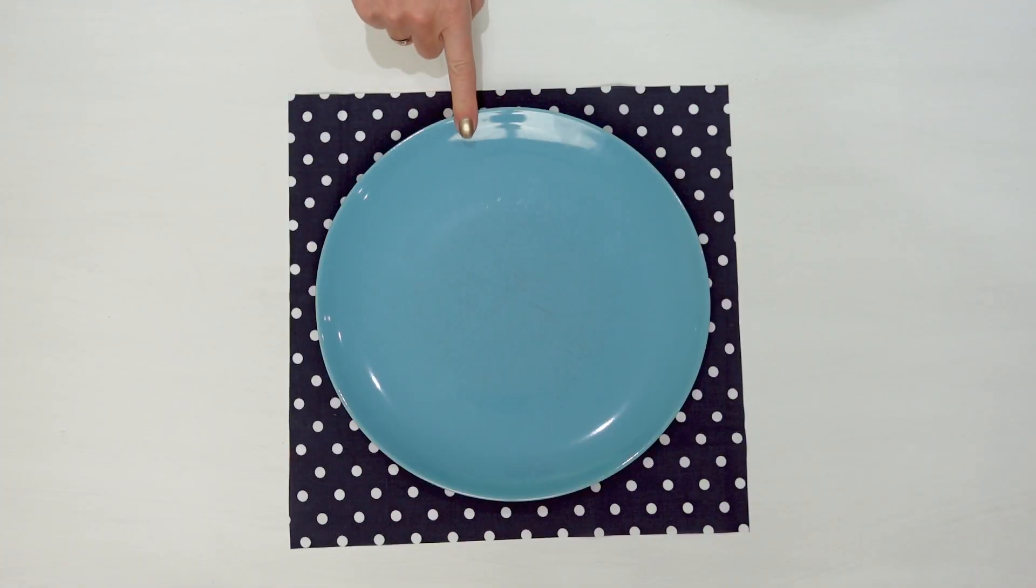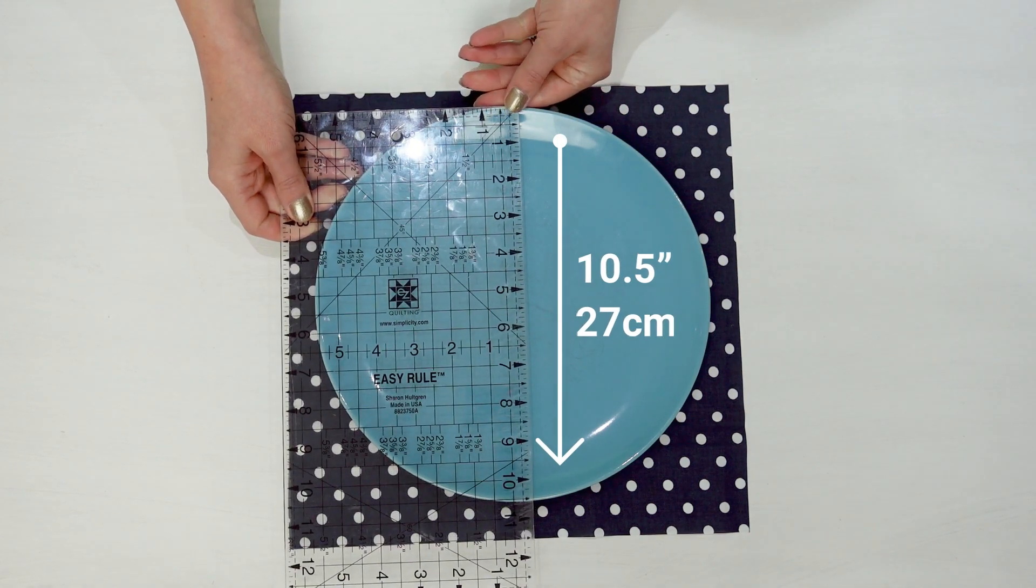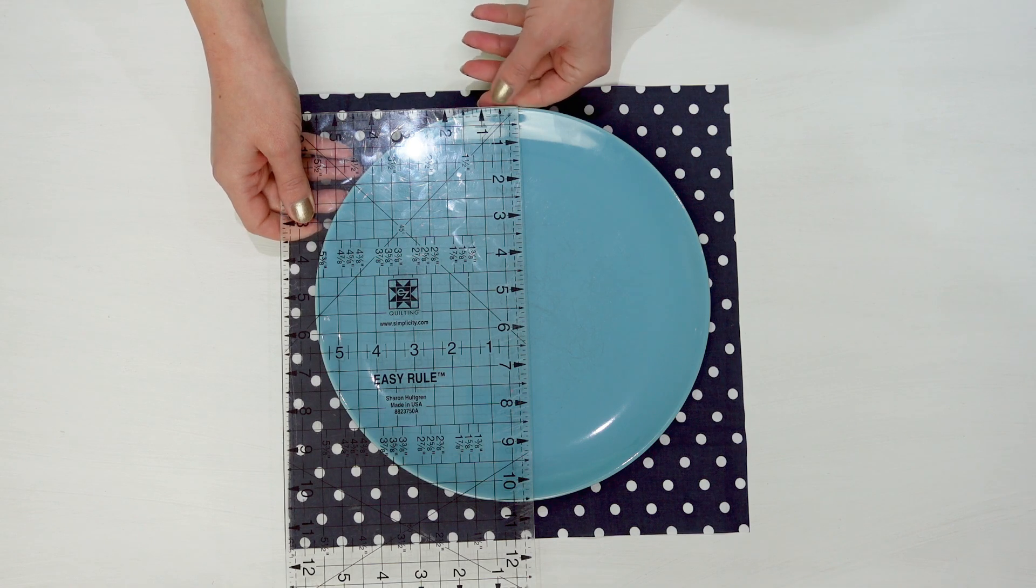To make your face mask you'll need a standard dinner plate. Ours is 10 and a half inches or 27 centimeters wide, but don't worry if yours isn't exactly the same, anything similar will be fine.